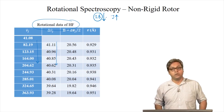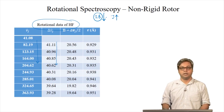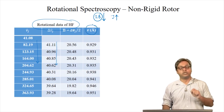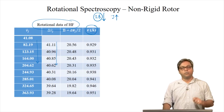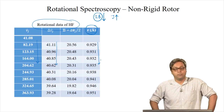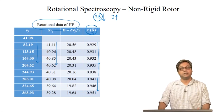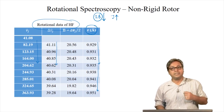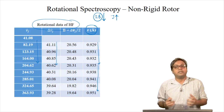Why is the energy difference decreasing with increasing J? We can get some hint by looking at the last column, which shows the internuclear distance. We can see a steady increase in the internuclear distance with increasing J. In other words, the molecule is not strictly rigid — the bond length increases with increasing J.